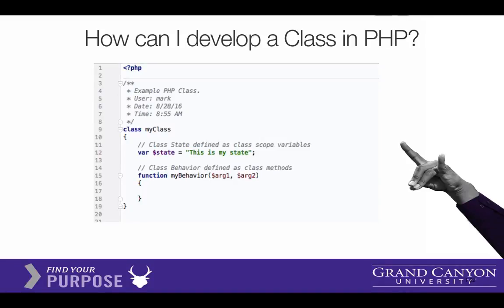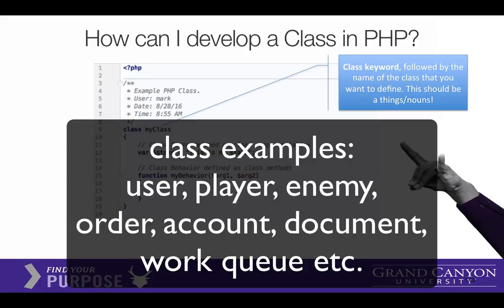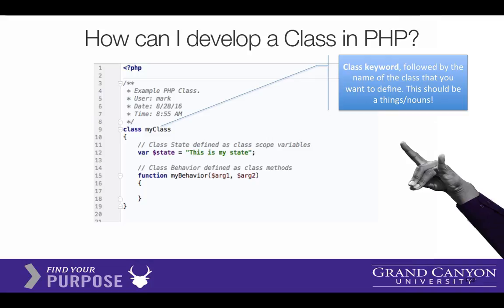In this video we're going to talk about what a class looks like in object-oriented design in PHP. Starting off with the word class and then the name of what I'm going to design — this should be a thing, like a noun. Usually it would be something like a user, a video game character like a hero or an enemy, a player, a cart, an order — anything you can name as a noun.